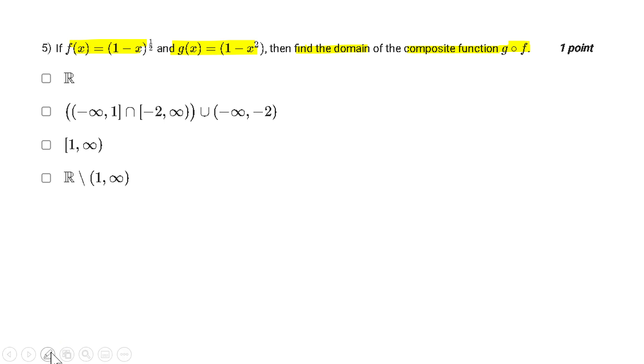So a composite function is a function which is made by two functions. And the composite function which we have to get the domain is g∘f, which can be written as g of f(x).